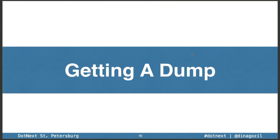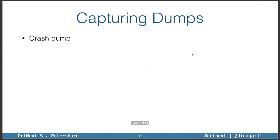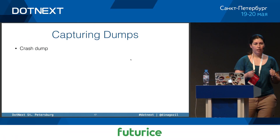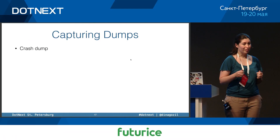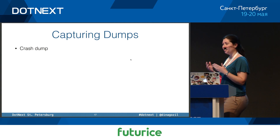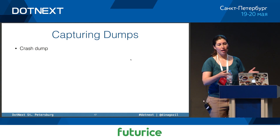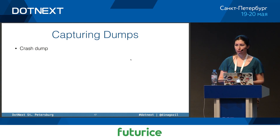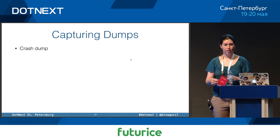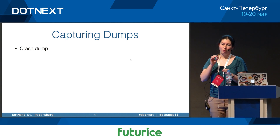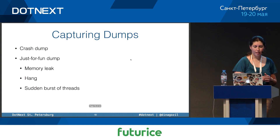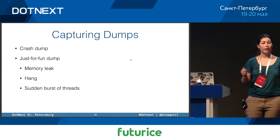I hope now we're convinced that dumps are going to give us everything we need in order to be able to solve our mysterious crashes. So let's talk about how we can obtain such magical files. There are two main scenarios where you might want to take a dump. The first is a dump of a crashing application — just like we saw, if you want to analyze the crash, you will need a dump of the process at the moment right before it crashed. The second scenario is taking a dump of a running process.